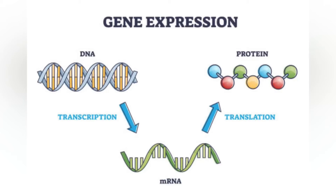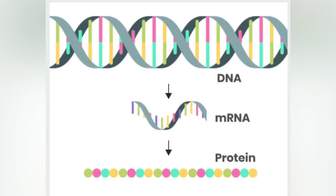A very important modification of eukaryotic pre-mRNA is RNA splicing. The majority of eukaryotic pre-mRNAs consist of alternating segments called exons and introns. During the process of splicing, an RNA-protein catalytic complex known as the spliceosome catalyzes two transesterification reactions, which remove an intron and release it in the form of a lariat structure, and then splice neighboring exons together.